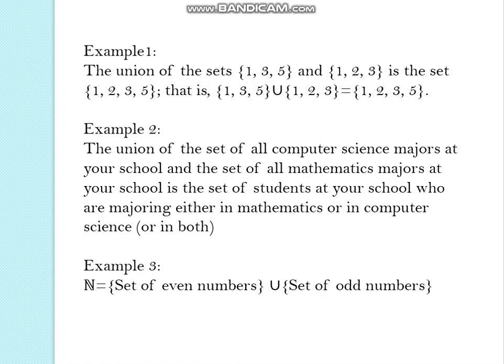The example is if you consider a set which contains 1, 3 and 5, another set which contains 1, 2, 3 then the union of these sets will be 1, 2, 3 and 5. 3 is the common element to both of them which is considered only once.